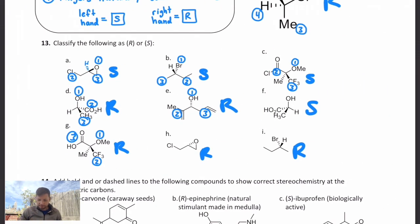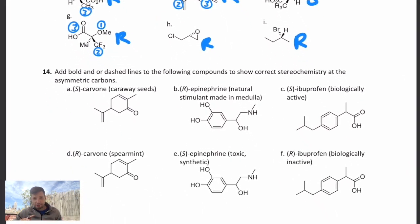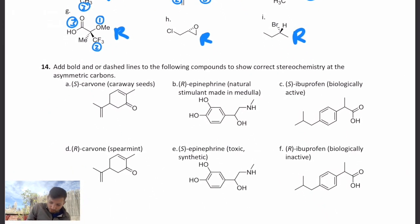So you should have gotten S, S, S, R, R, S, and then R, R, R for those. Lastly let's wrap this up and turn this around and take a name with a given designation of R or S and modify an otherwise ambiguous drawing to have it make sense.